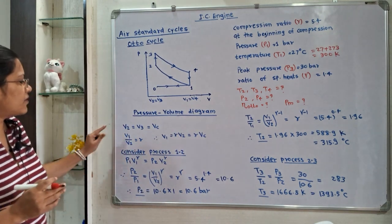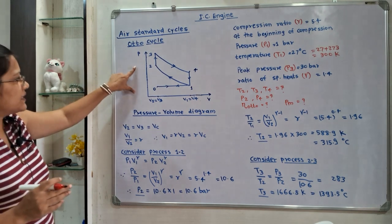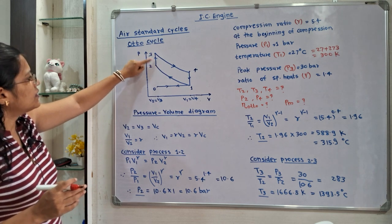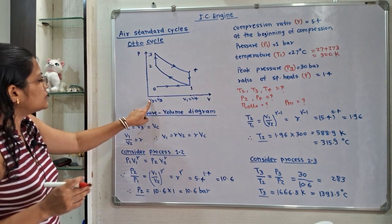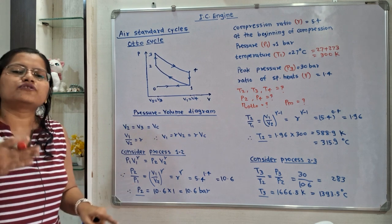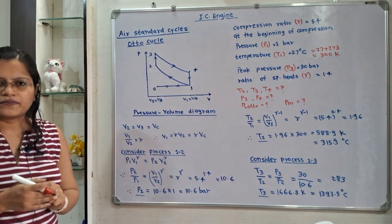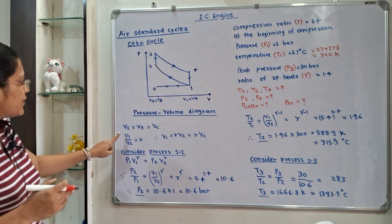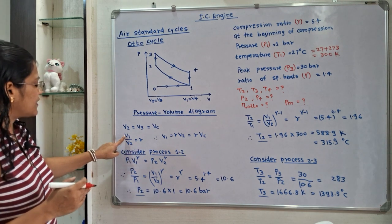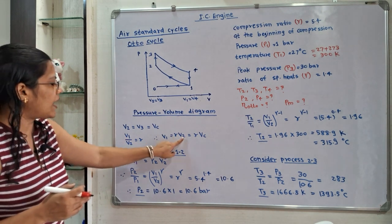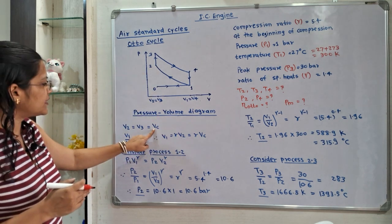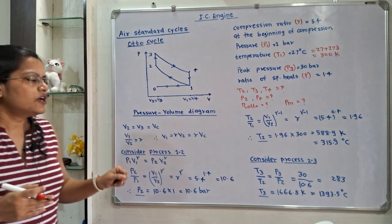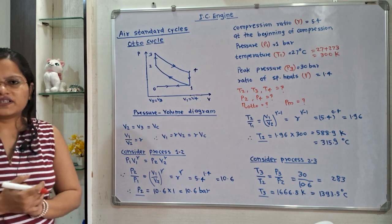From the diagram, V2 equals V3, and these two volumes are known as the clearance volume Vc. Since V1 by V2 equals R, therefore V1 equals R·V2. Since V2 equals Vc, we can also say V1 equals R·Vc. This is the relation between the volumes.